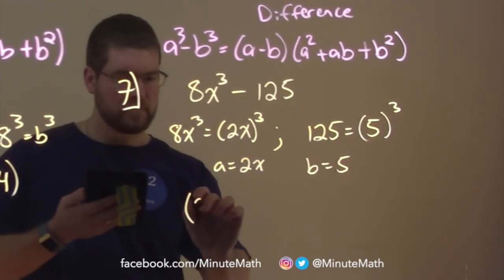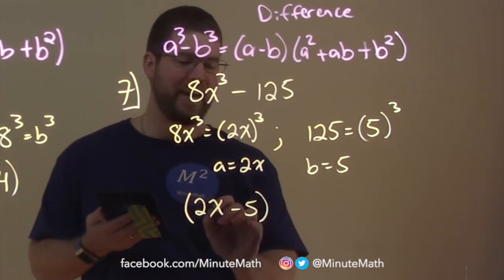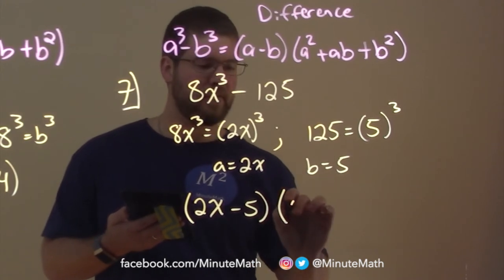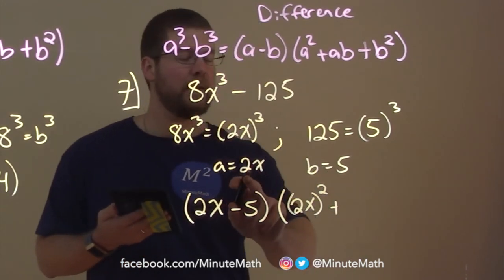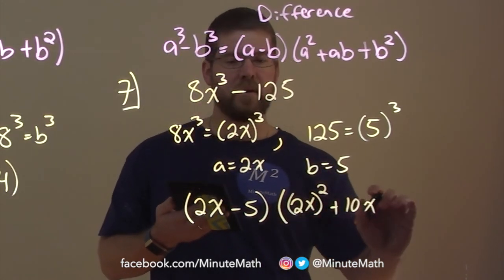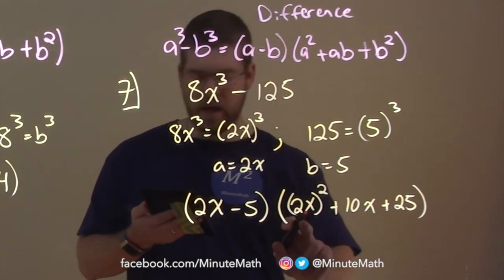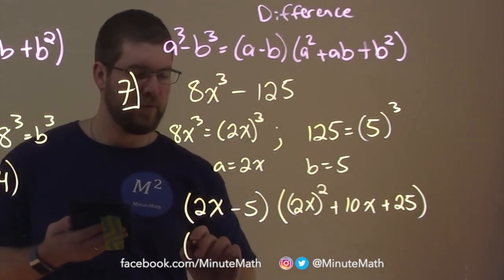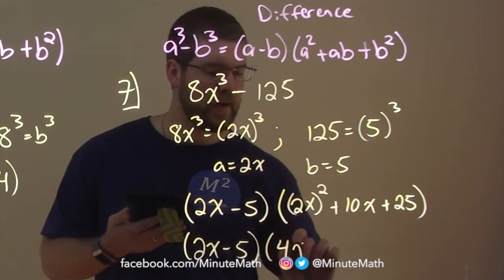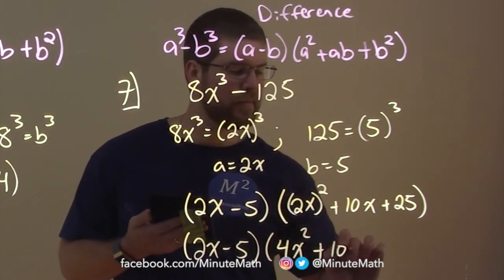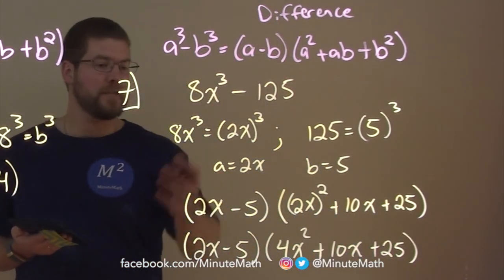a is 2x minus 5 and our b is, a is 2x, b is minus 5. We can go again. a is 2x all squared plus a times b, 2x times 5 is 10x. And plus b squared, 5 squared is 25. Or you write 5 squared. Now, we can simplify this a little more. Okay? So, let's rewrite it. 2x minus 5. 2x squared is 4x squared plus 10x plus 25. And there we have it. We've used the difference of cubes formula to factor.